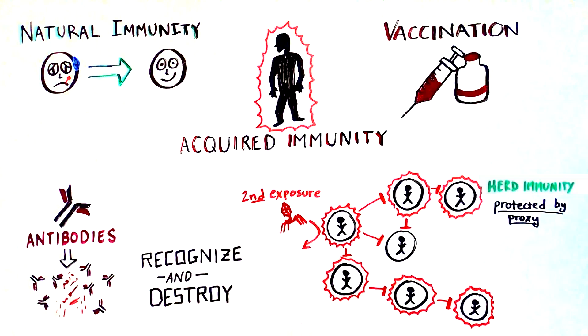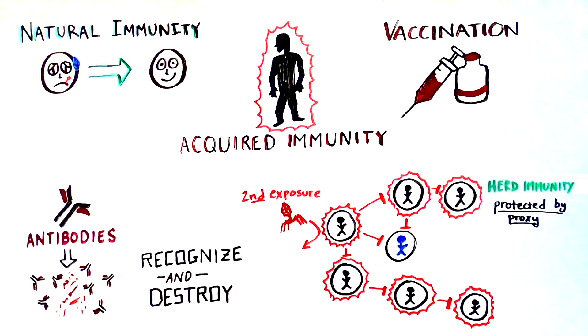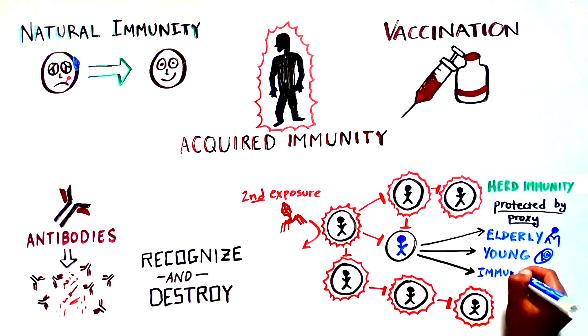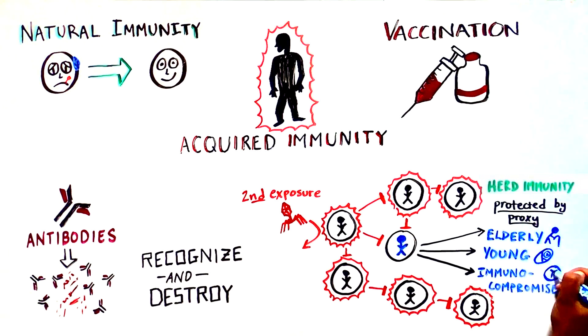This is particularly important for people whose immune systems are too fragile to develop natural immunity or get a vaccination, like the elderly, the very young, or those who are immunocompromised.